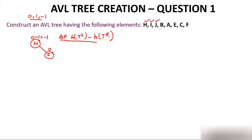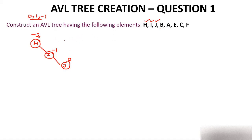Now insert J. J comes to the right of I. Calculate the balance factor: H has balance factor 0 minus 2 = minus 2, I has minus 1, and J has 0. This tree is not an AVL tree because the balance factor of node H is minus 2, which is not in {0, 1, -1}. We need to rotate. The imbalance is on the right of right, so it is an RR rotation.